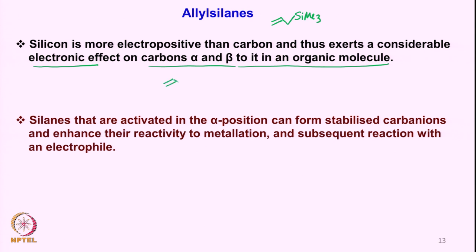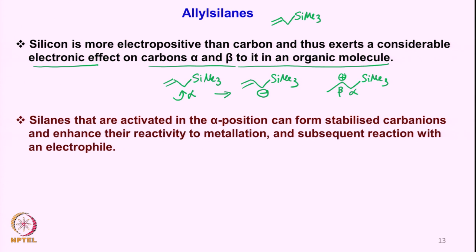For example, if you have a silicon here in a molecule, you can expect the alpha position to be very specifically converted to an anion. So you can very easily generate an anion alpha to the silicon. Similarly, if you can generate a cation at the beta position with respect to the silicon, this beta carbocation is also an important feature for silicon-based reagents and their reactions.